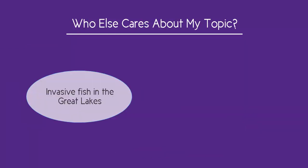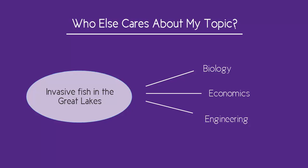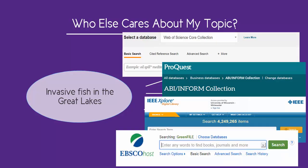It's also a good idea to think about which disciplines might have written something on your topic. People from several fields might be interested in the Great Lakes, and they will all have unique points of view that could be helpful to your research. For example, besides biology, business or economics, engineering, and environmental or public policy researchers might all have something to say on this topic, so you might want to try those databases too.